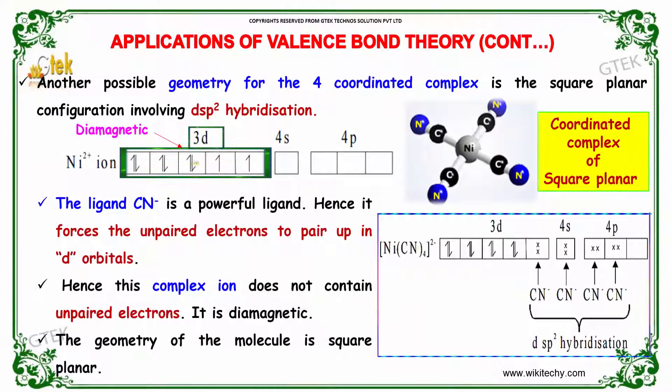Another possible geometry for the 4-coordinated complex is the square planar configuration, involving dsp2 hybridization.